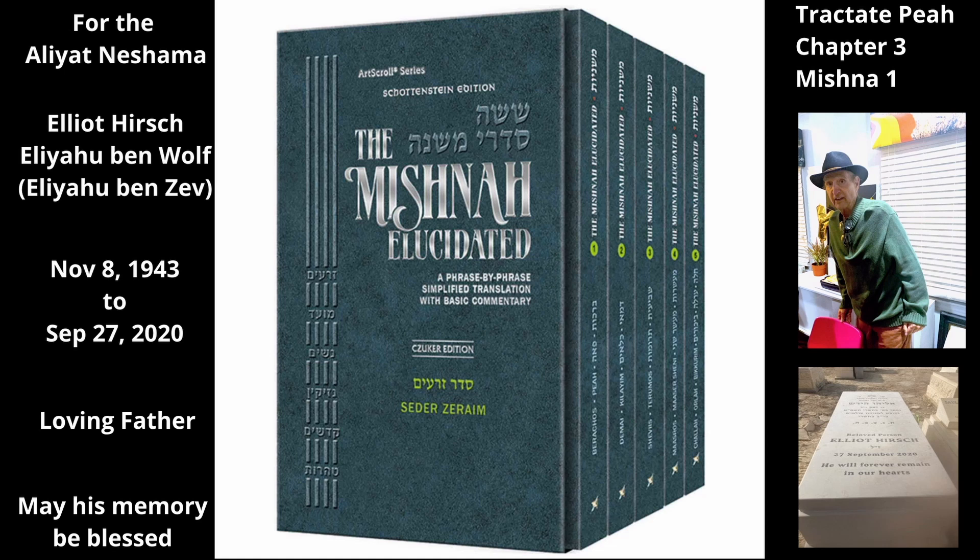And Beit Shammai agree that if the edges of the rows were connected — that is, the edge of each square was connected at some point to the square next to it — he may give payah from one square for all of them. Since all the squares are connected, even Beit Shammai agree that they are all considered to be part of a single field.